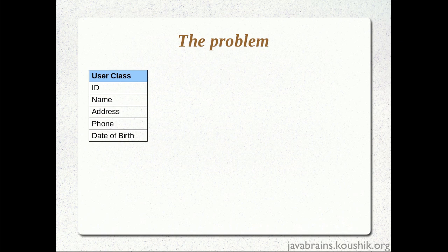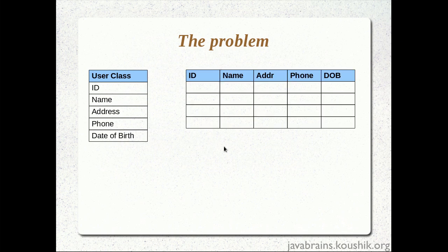So I would have to store all these user objects and their data into the database. I would have a user table, and each of these user objects would have data for a particular user, saved as rows in the table. I would have five columns that correspond to the five member variables of the user class. User object one would be saved as row one, user object two as row two. So a class corresponds to a table, and an object of the class corresponds to a row in the table.